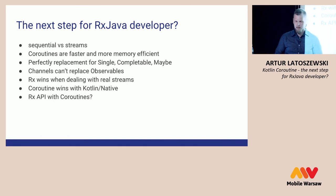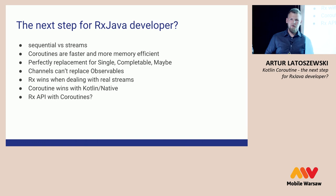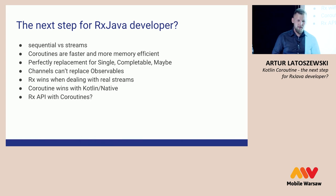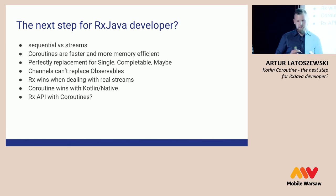Coroutines are much faster and more efficient than RxJava — they create fewer objects. In my opinion, coroutines are a perfect replacement for RxJava objects like Single, Completable, and Maybe. Unfortunately, channels are far worse than observables and can't replace them. RxJava wins everywhere you need to deal with a real stream, but coroutines win everywhere you want to write Kotlin-native code — Kotlin native being the thing where you write one codebase that can run on multiple platforms: Android, the web, and even iOS, though they're still working on it.